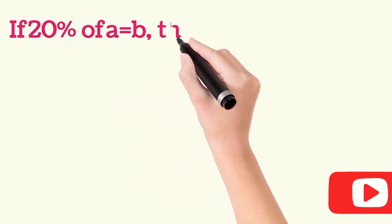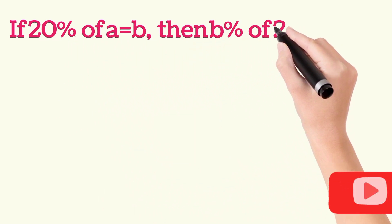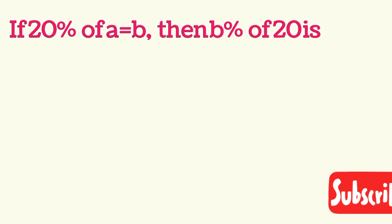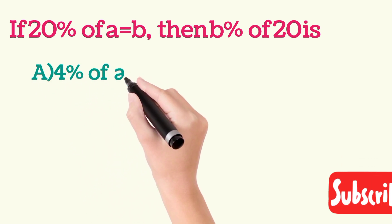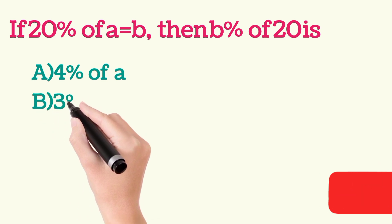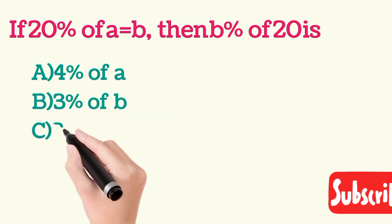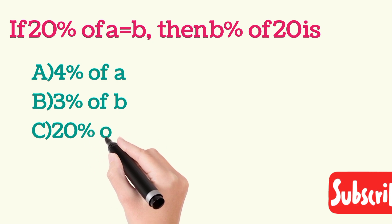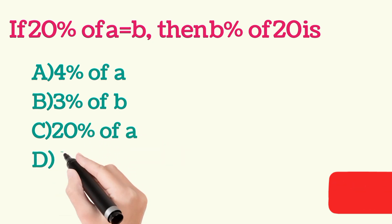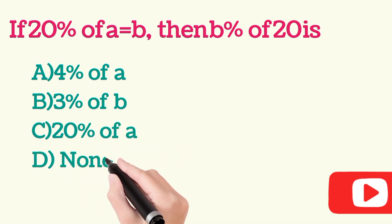Here is another question in which it is given that 20% of A is equal to B, then find B percent of 20. The options are 4% of A, 3% of B, 20% of A, and option D none of above.